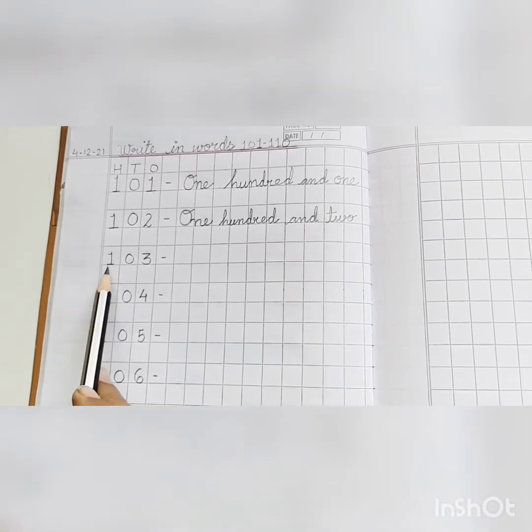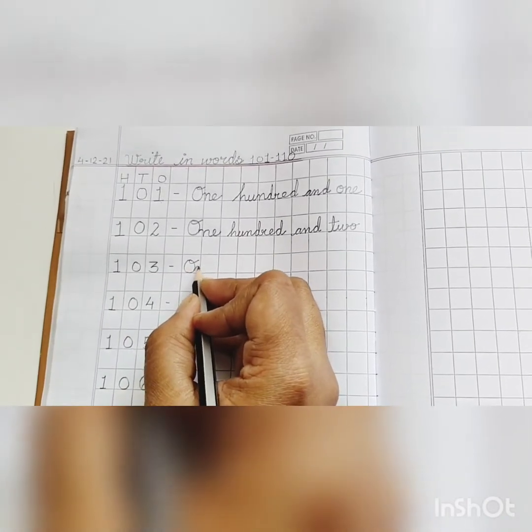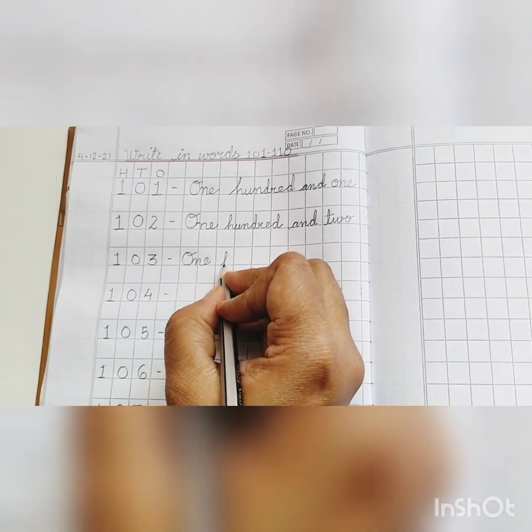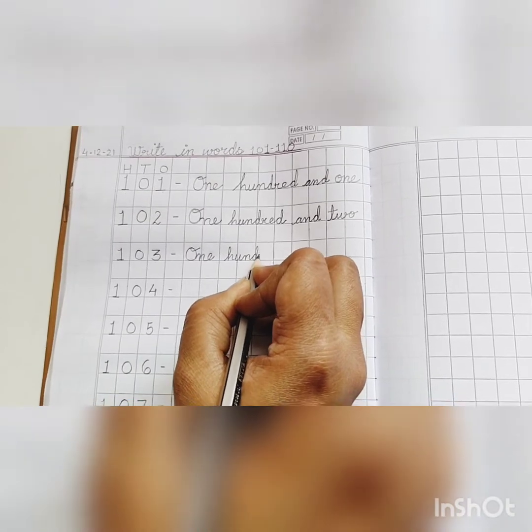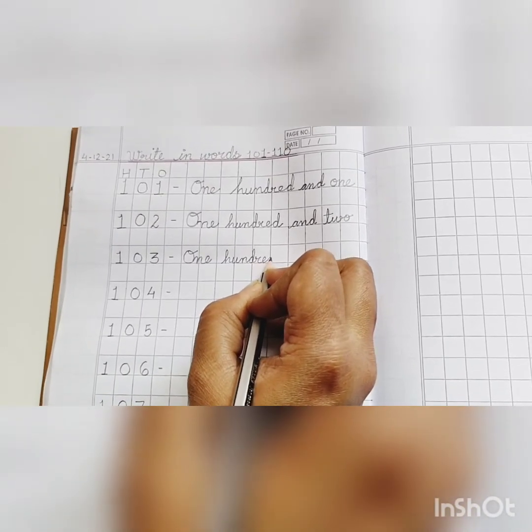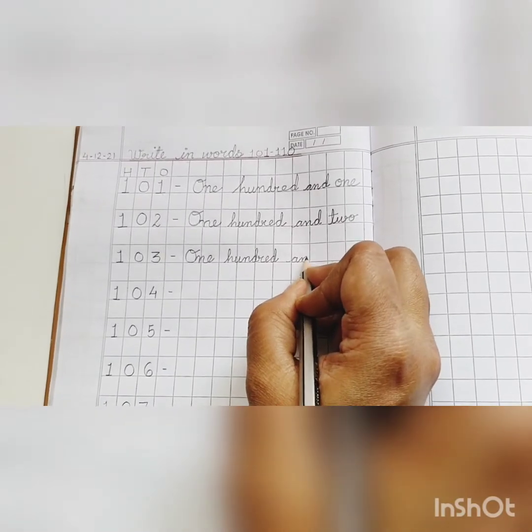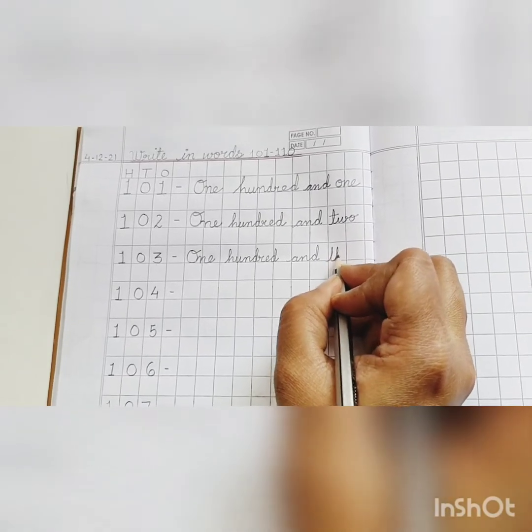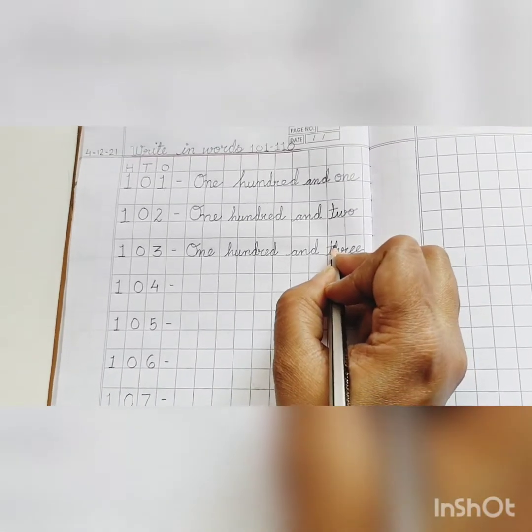Next, one hundred and three. O-N-E, 1, H-U-N-D-R-E-D, 100, and three. T-H-R-double E, three.